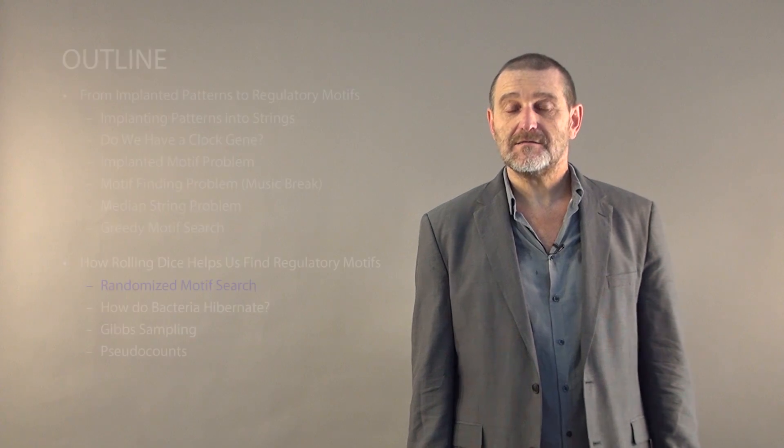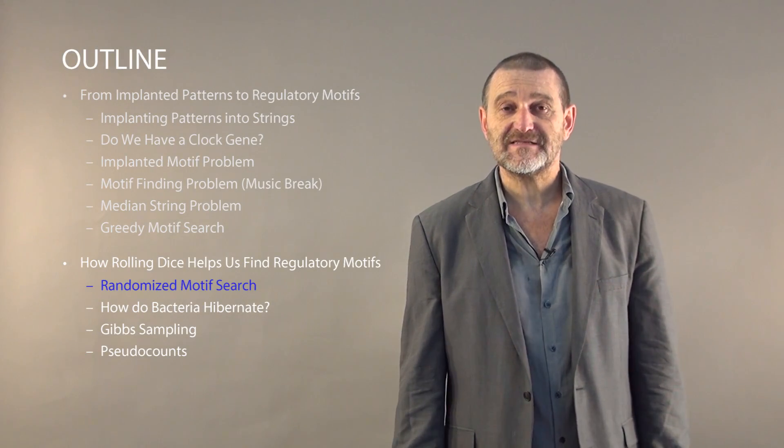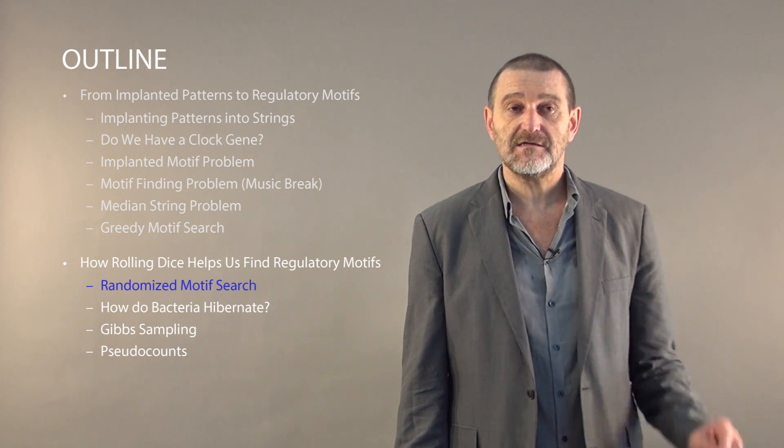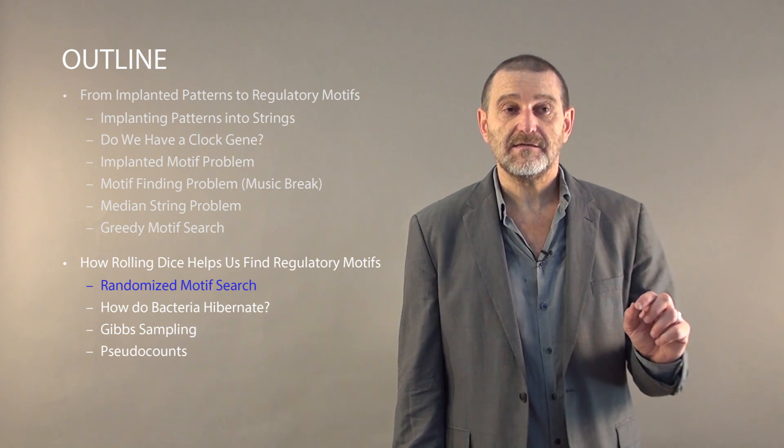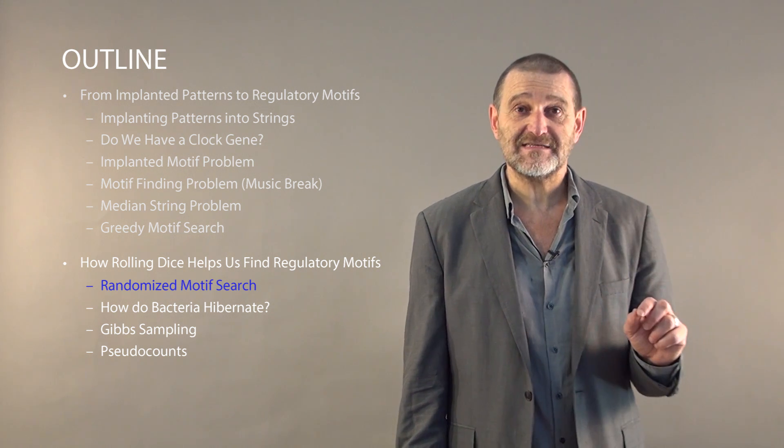You may be surprised, but the most popular algorithm for finding motifs in DNA sequences roll dice and take chances to find such motifs. They're called randomized algorithms.